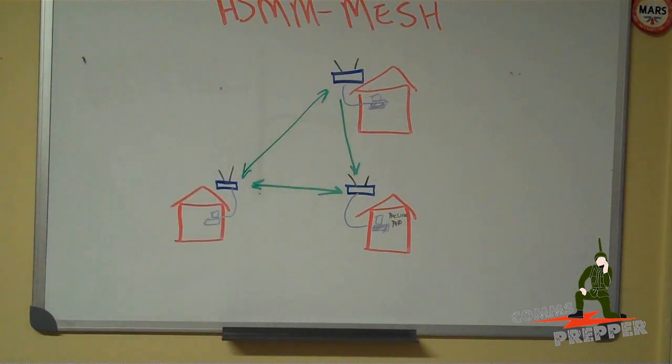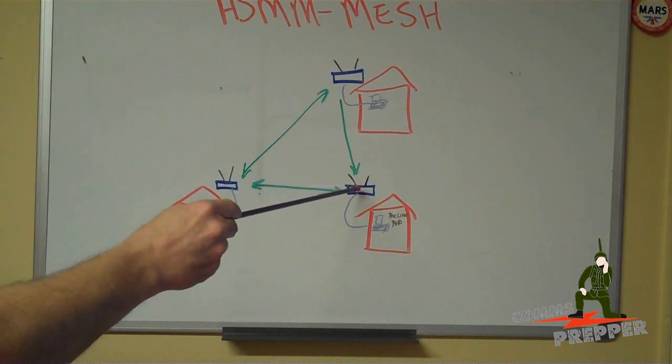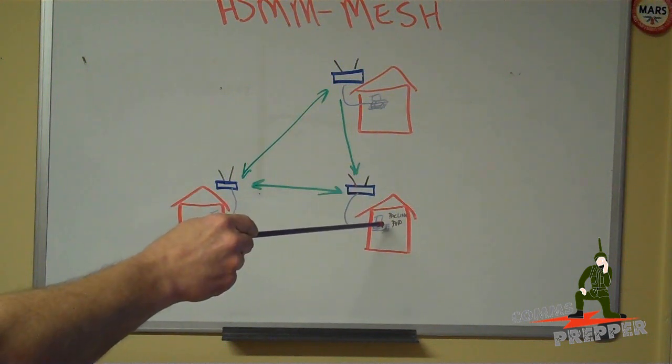These are actually individual nodes and they build on each other so you can keep adding nodes and you'd have redundant paths to other nodes for passing data communications. Now, the configuration I have set up here that I'm going to show you, what I'm doing is I have a laptop connected to a node.